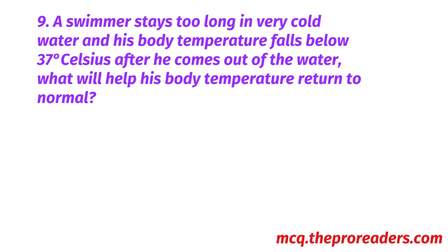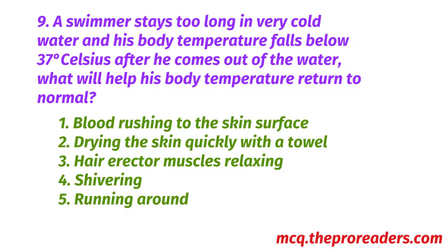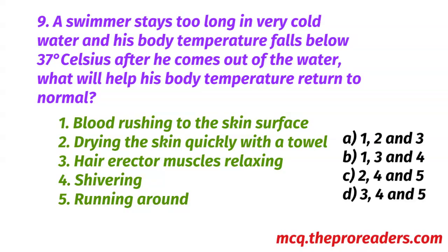A swimmer stays too long in very cold water and his body temperature falls below 37 degrees Celsius after he comes out of the water. What will help his body temperature return to normal? 1. Blood rushing to the skin surface. 2. Drying the skin quickly with a towel. 3. Hair erector muscle relaxing. 4. Shivering. 5. Running around. A. 1, 2 and 3. B. 1, 3 and 4. C. 2, 4 and 5. D. 3, 4 and 5. Option C, 2, 4 and 5, is the correct answer.